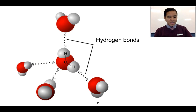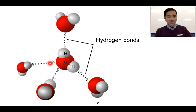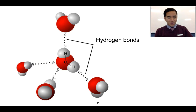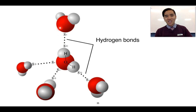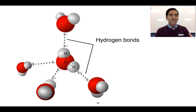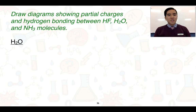Looking at some water molecules: the structure is V-shaped, with hydrogen being partially positive and oxygen being partially negative. This meets the requirements for hydrogen bonding because we have hydrogen bonded to an electronegative oxygen, which is then attracted to the electronegative oxygen of an adjacent molecule. Each of these dotted lines represents a hydrogen bond, and it's important that you can explain why these are classified as hydrogen bonds and not just dipole-dipole interactions.